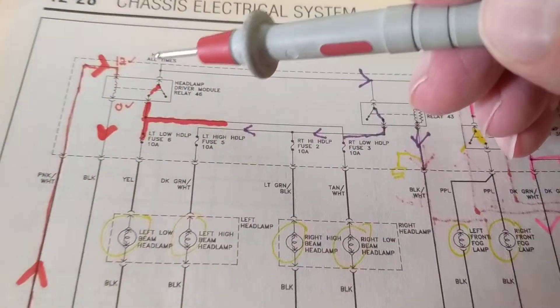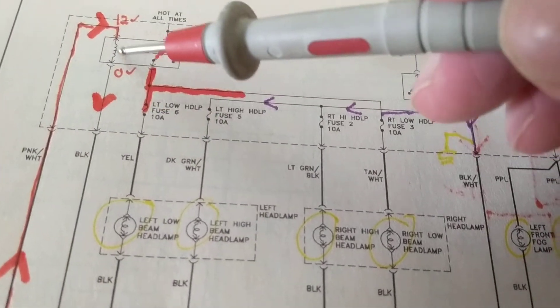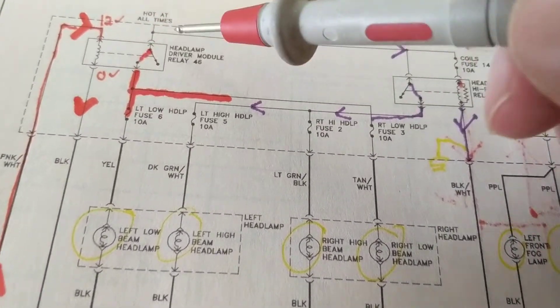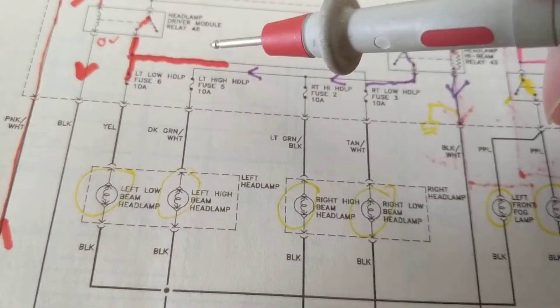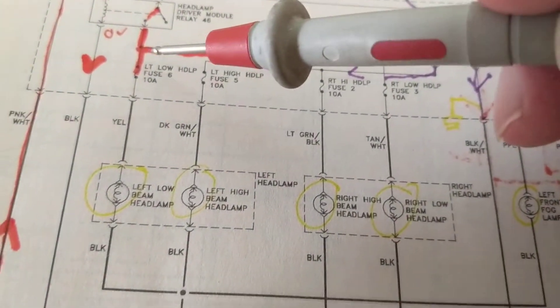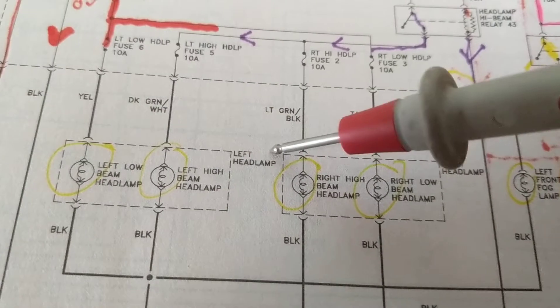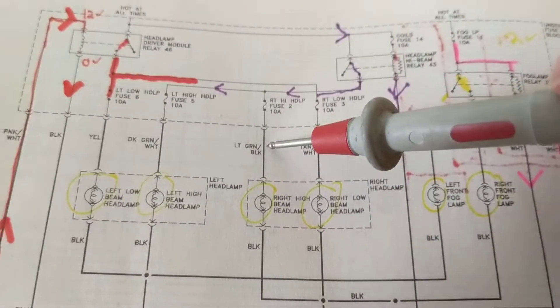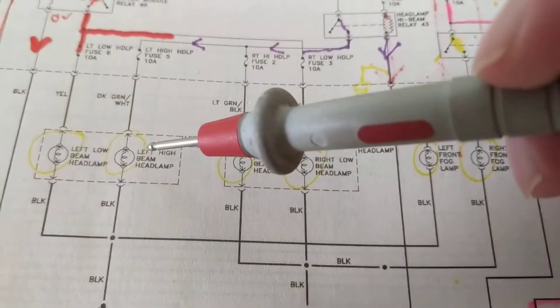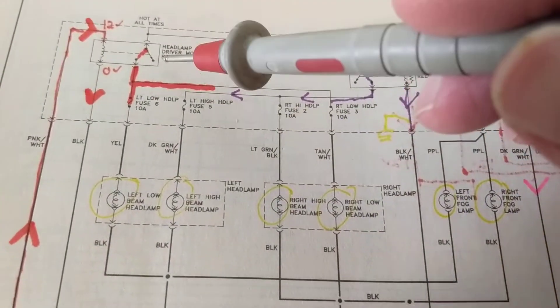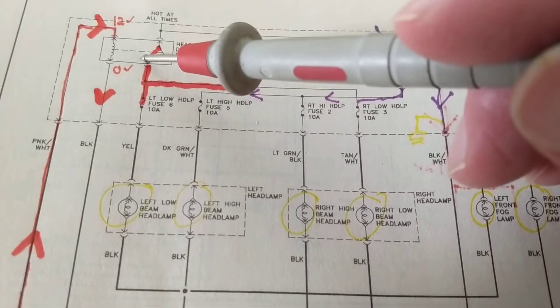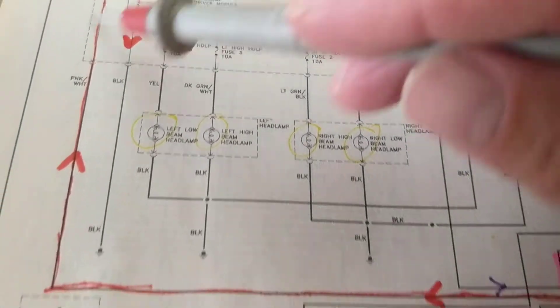Once you get the 12 volts, this is energized. Now what happens to this? This goes from here to here and it goes to here. And now, it could go to left low beam and proper high beams and all these lights over here. So when you have your lamps not being turned on left and right, high beams or low beams, guess who you can blame? You can blame the relay. Could be the relay. Could be the body control module.